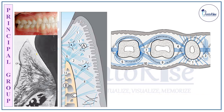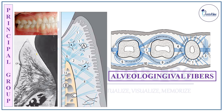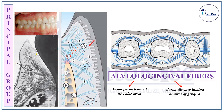The second category of fibers within the principal group are the Alveolo-Gingival fibers. From the name itself, these fibers start from the alveolar part — more particularly from the periosteum of the alveolar crest — and progress coronally into the lamina propria of the gingiva, as seen in the figure. Thus, these fibers connect the gingiva to the bone.